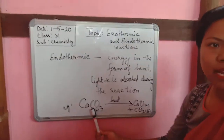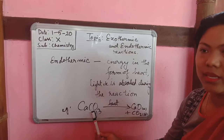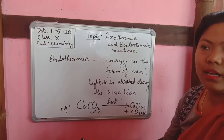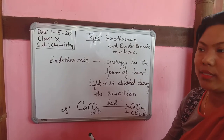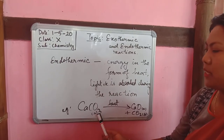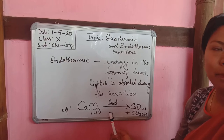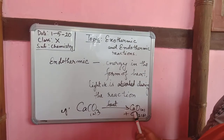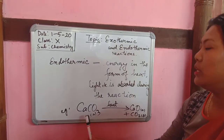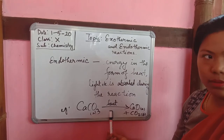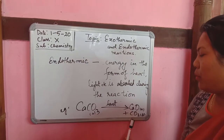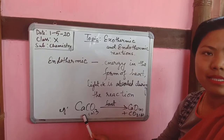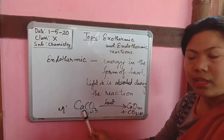Decomposition reactions are further classified into three types based on the nature of energy they absorb. For example, calcium carbonate — if you supply heat, calcium carbonate will break down to give calcium oxide and carbon dioxide gas. Calcium carbonate absorbs heat and breaks down to form calcium oxide and carbon dioxide. This is an example of thermal decomposition and also an example of an endothermic reaction.